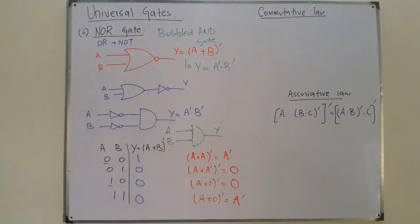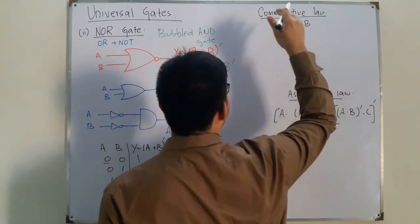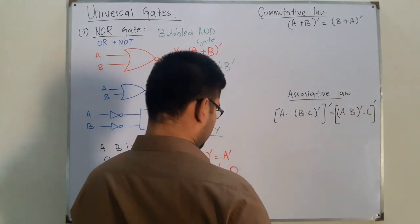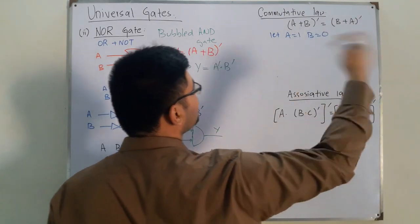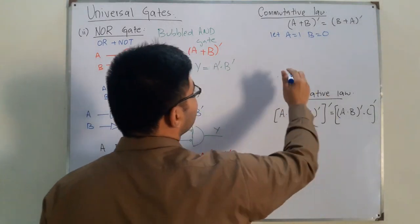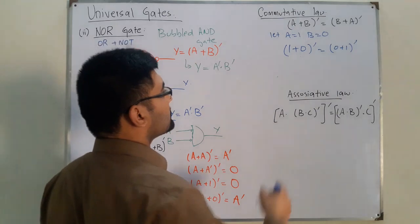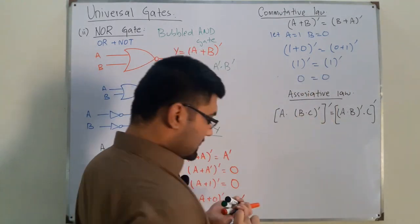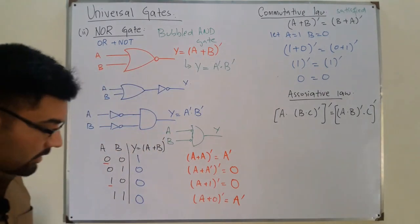Now the commutative law for the NOR gate: A NOR B equals B NOR A. Let's say A is one and B is zero. One NOR zero: one OR zero is one, complement is zero. Zero NOR one: zero OR one is one, complement is zero. Zero equals zero, so the commutative law is satisfied by the NOR gate as well.